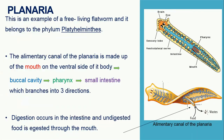Let's look at some digestive systems in various organisms, starting with planaria. Planaria is an example of a free-living flatworm and belongs to the phylum Platyhelminthes. The alimentary canal of planaria is made up of the mouth, which is found on the ventral side of the body, leading to the buccal cavity. The buccal cavity leads to the pharynx, and the pharynx leads to the small intestine, which is branched into three directions, as seen in the image. Digestion occurs in the intestine, and undigested food is ejected through the mouth as well.